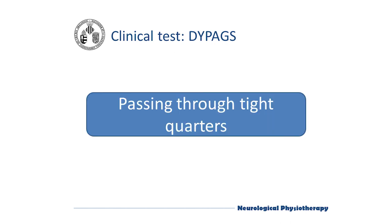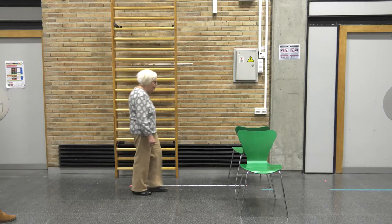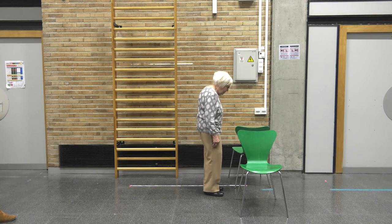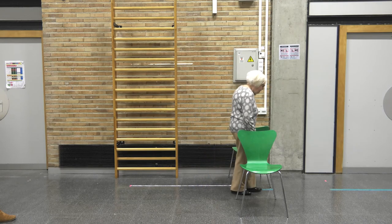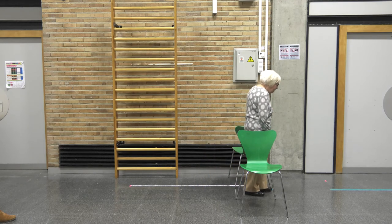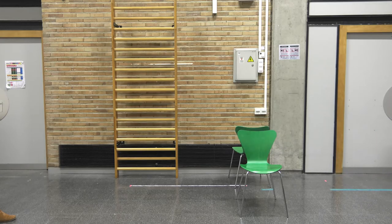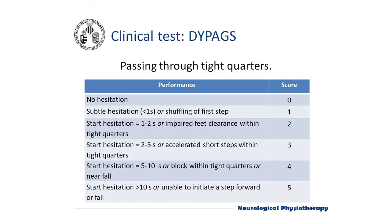Passing through tight quarters, we place two chairs in the middle of the corridor to create the feeling of a narrow corridor. We observe if the patient can pass through this space fluently. The score is applied depending on hesitation during the movement, or if the patient is unable to pass through the narrow space.